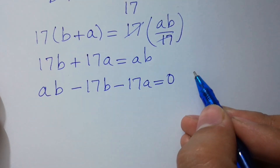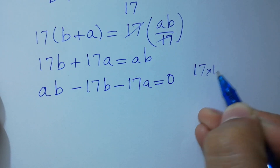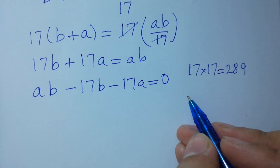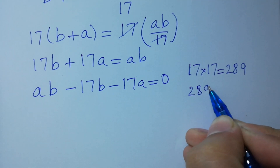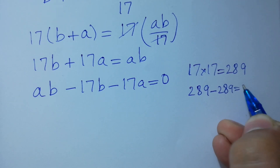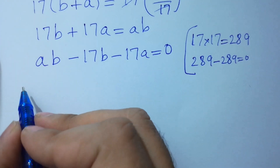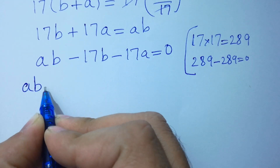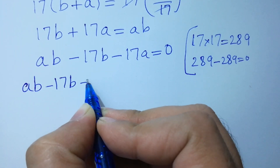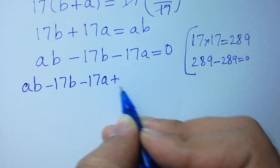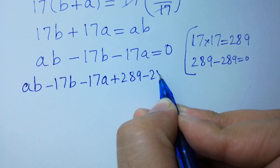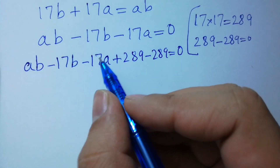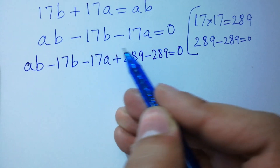Now, since 17 times 17 equals 289, and 289 minus 289 equals 0, we can write: ab minus 17b minus 17a plus 289 minus 289 equals 0. If we cancel the 289s we get back ab minus 17b minus 17a equals 0, as before.